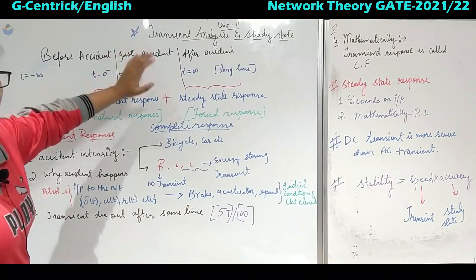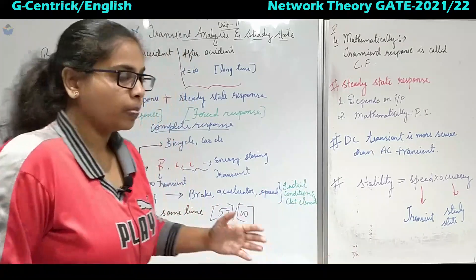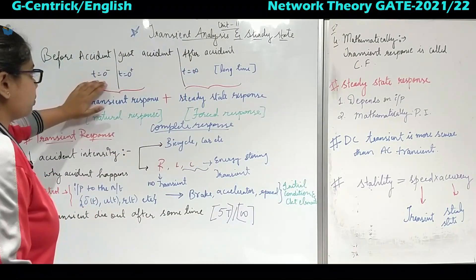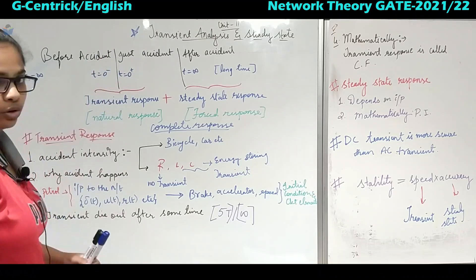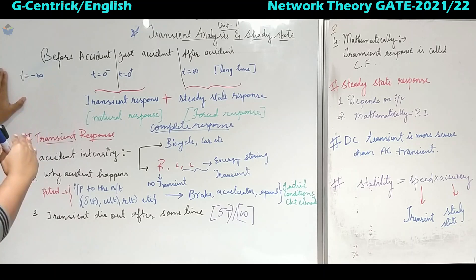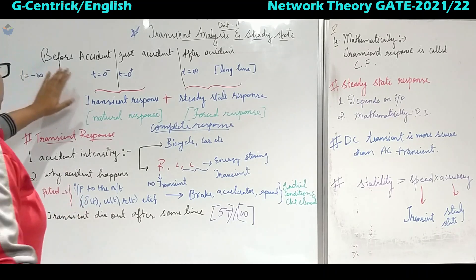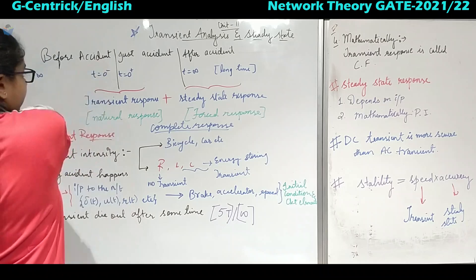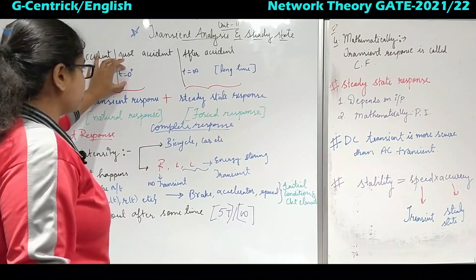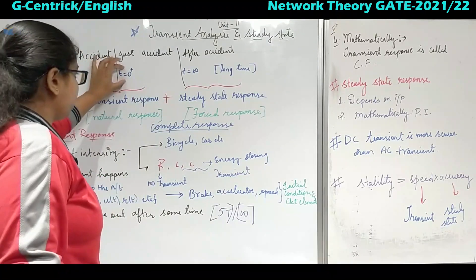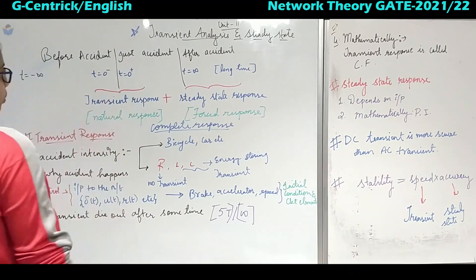We can call that event as just an accident. Before the accident, you were riding well, you were conscious. Now, just before the accident and just after the accident, this time period will be like 0 minus and 0 plus. T equal to minus infinity is very far — negative time axis does not exist, but theoretically we consider it for convenience. So 0 minus is just before you have fallen from the cycle, and T equal to 0 plus is just after you have immediately fallen from the bicycle. This time period is called the transient response.